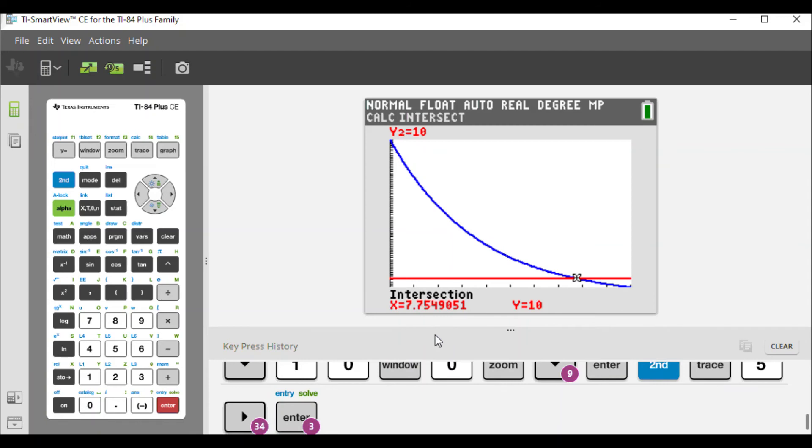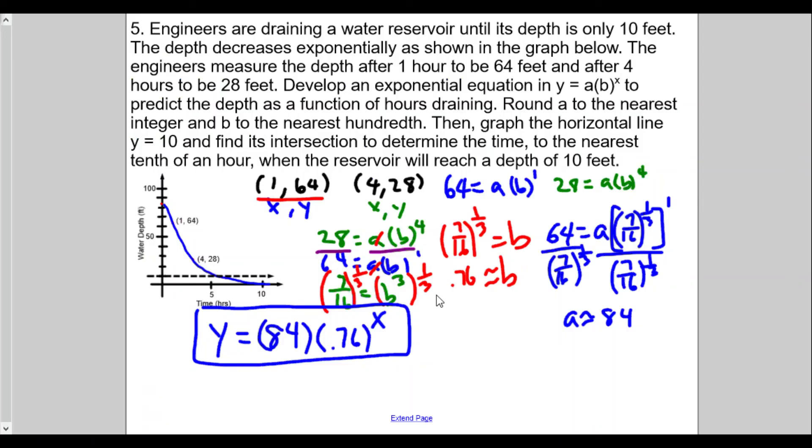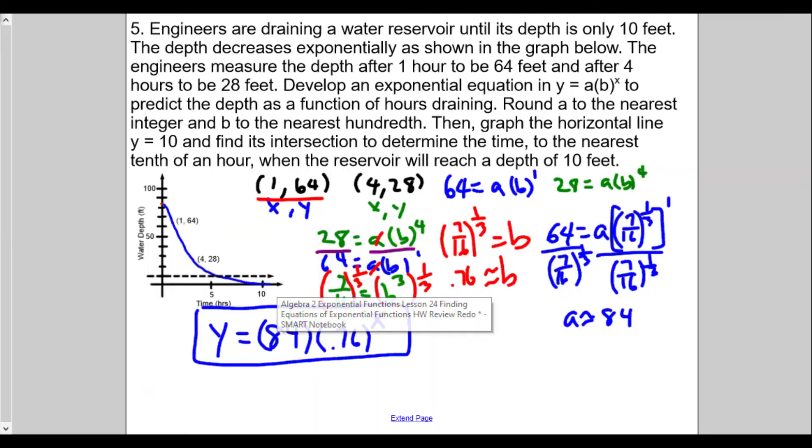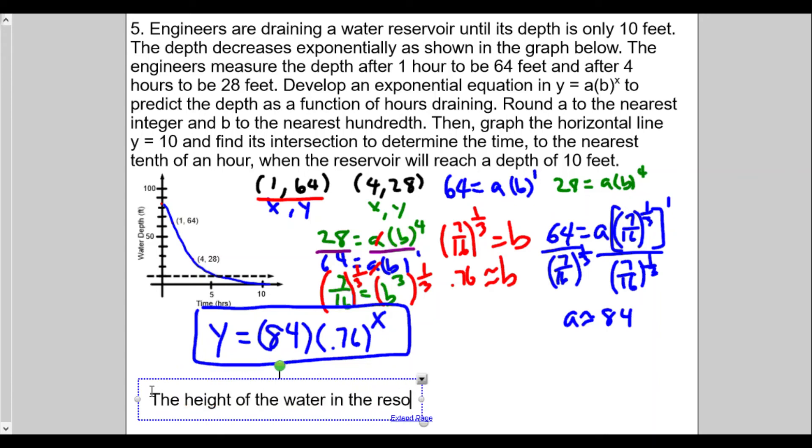So when does the reservoir reach the height of 10 to the nearest tenth of an hour? To the nearest tenth of an hour will be 7.8. Let's double check to make sure—we had 7.75 before. To the nearest tenth means we're going to go to the hundredth place, and since it's 5 or higher, we round up one. So the height of the water in the reservoir will reach 10 feet at about 7.8 hours.